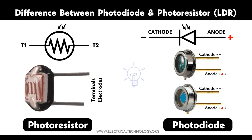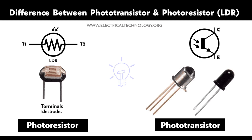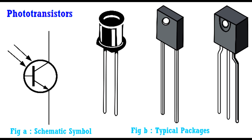Infrared receivers use phototransistors to detect infrared light signals from remote controls and other IR transmitters. Used in remote control systems for TVs, air conditioners, and other household appliances, as well as data communication between devices. Smoke detectors use phototransistors to sense changes in light intensity caused by smoke particles scattering light — widely used in residential, commercial, and industrial smoke detection systems. Position sensors use phototransistors to detect light reflected or interrupted by an object, providing positional feedback; used in robotics, automotive systems, and industrial machinery.